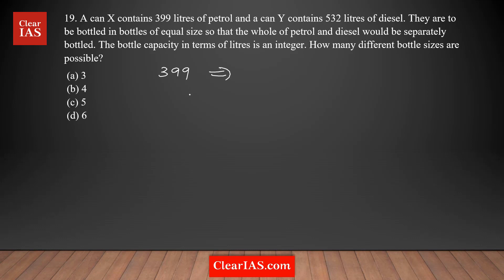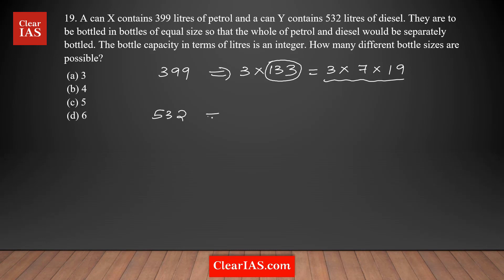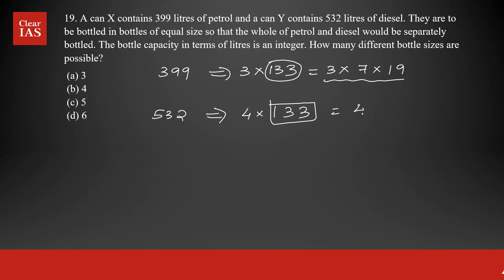Factorizing 399: it equals 3 times 133, which is 3 times 7 times 19. A shortcut to identify 133 as a multiple of 7: 140 is a multiple of 7, and 140 minus 7 is 133. And 19 is a prime number. For 532: it's a multiple of 4, so 532 equals 4 times 133, which is 4 times 7 times 19.